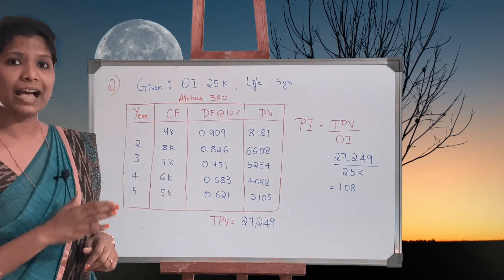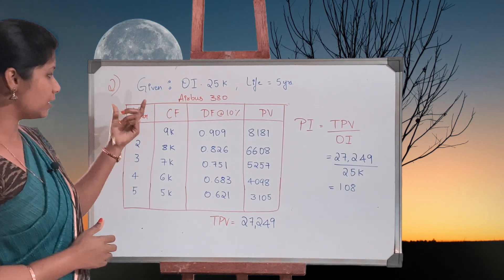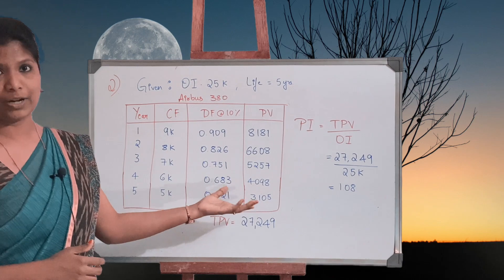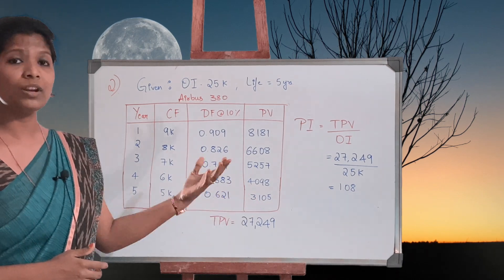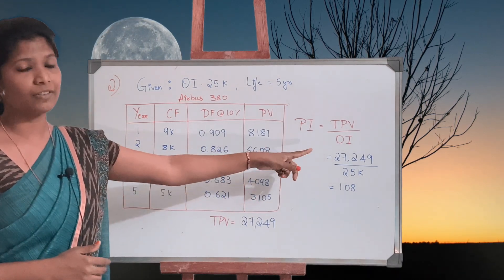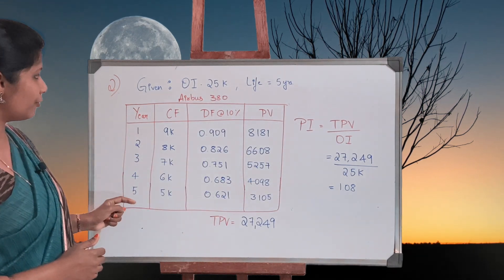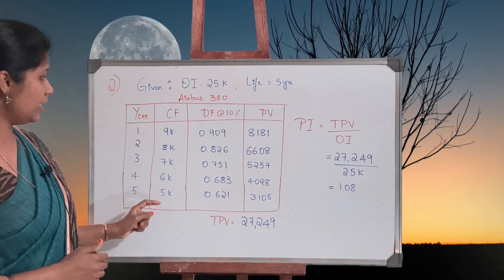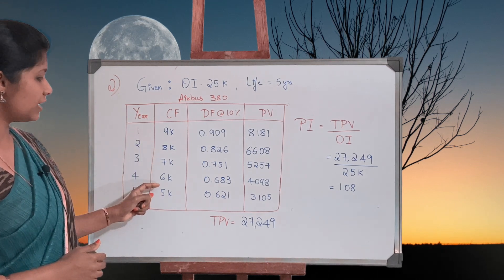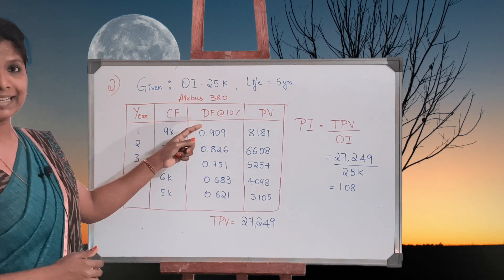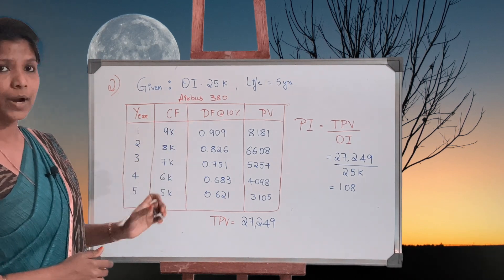The process of Profitability Index is the same as Net Present Value - that is year, cash flows, discount factor, and present value. Only the last part of calculation is going to change. Year one to five cash flow is given in the question: nine thousand, eight thousand, seven, six, and five thousand.